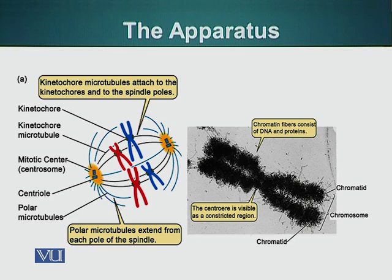The two types of microtubules that come out of the centrosome are the kinetochore microtubules, which are attached to the chromosomes at a specific region called kinetochore. The other microtubules that are not attached to the kinetochore are called polar microtubules.